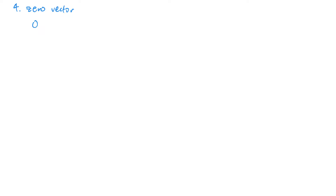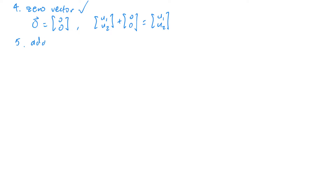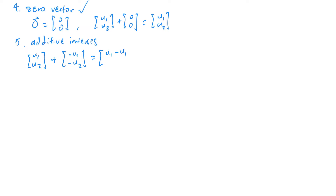Property 4 says there is a zero vector. In our case, the zero vector is the vector (0, 0). If I take any arbitrary u₁, u₂ and add the zero vector to it, I just end up with u₁, u₂. Property 5 says there are additive inverses. For any vector u₁, u₂, the additive inverse is the vector −u₁, −u₂, because adding these two vectors gives u₁−u₁, u₂−u₂, which is the zero vector.